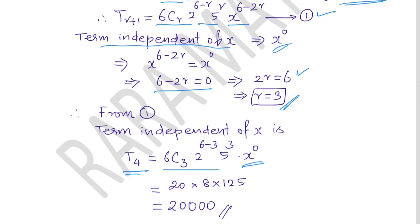Simplifying the constants: 6C3 = 20, 2^3 = 8, 5^3 = 125. Multiplying: 20 × 8 × 125 = 20,000. Since there is no x, this is the term independent of x, which equals 20,000.